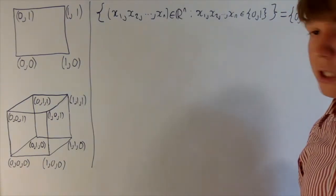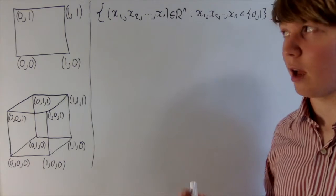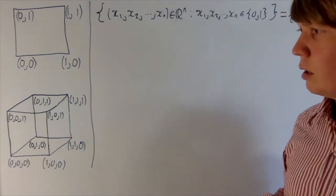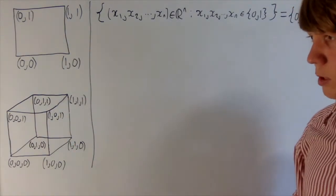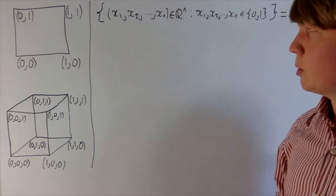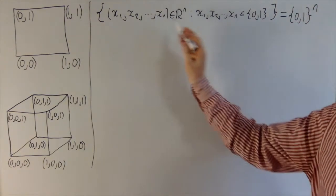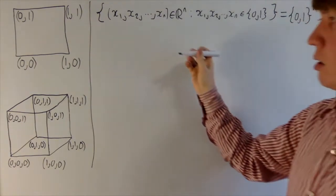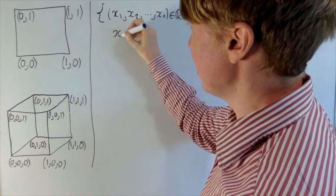The first thing we'll look at is how many vertices does it have. For the square and for the cube, it's pretty easy — you can just draw it and count them. We're going to need to be more clever than that for n dimensions, since we certainly can't draw this.